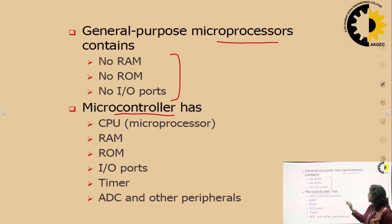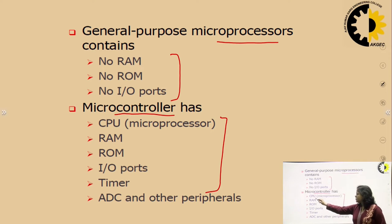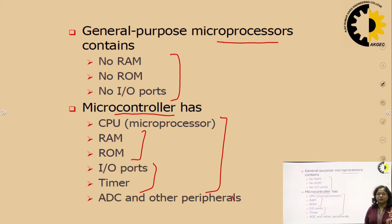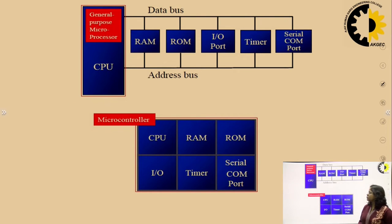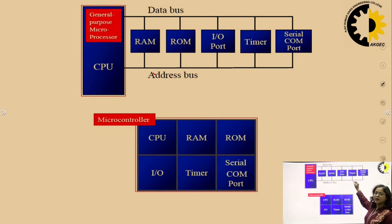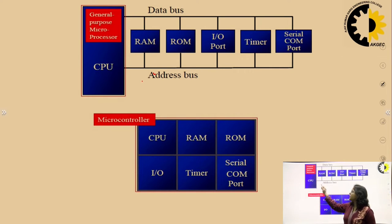Whereas a microcontroller is a complete system on a single chip, i.e., it consists of a CPU (microprocessor) plus memory (RAM, ROM), timer, peripherals, and all other devices required to make it a complete system. As we can see from this block diagram, a system consisting of a microprocessor has RAM, ROM, I/O devices, timer, and serial communication ports outside the microprocessor.